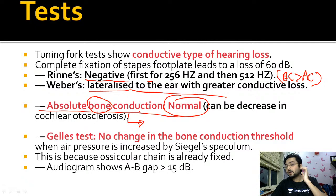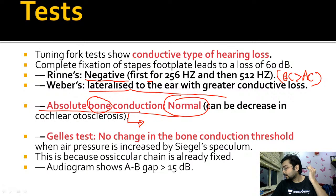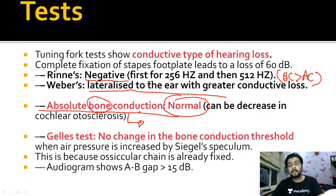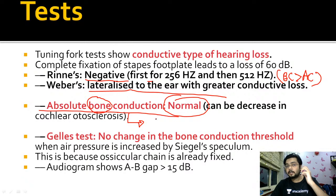In this test, I take a tuning fork, vibrate it, keep it over the mastoid process behind the pinna and close the tragus - blocking air conduction and testing only bone conduction through the temporal bone to the cochlea. If the patient says they have stopped hearing, we place the tuning fork to our own mastoid. If we can still hear but the patient could not, the patient's bone conduction is shortened. If neither of us can hear, bone conduction is normal - equal to the examiner's, meaning absolute bone conduction is normal.